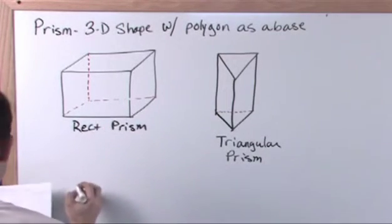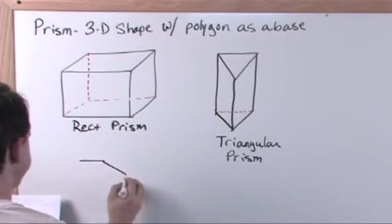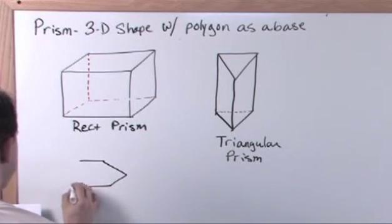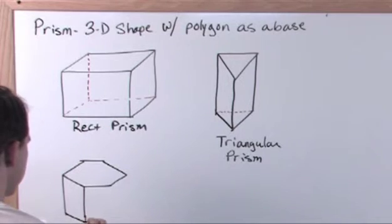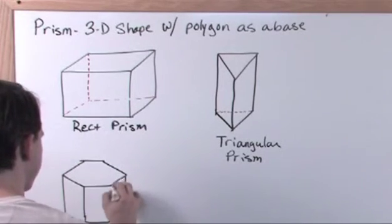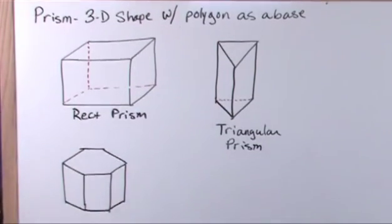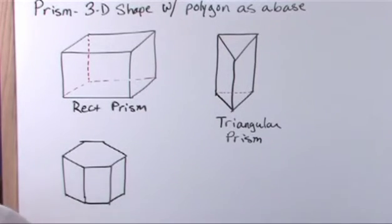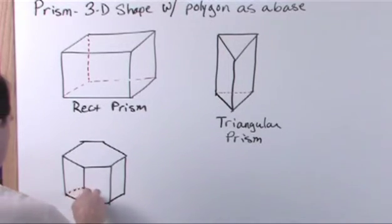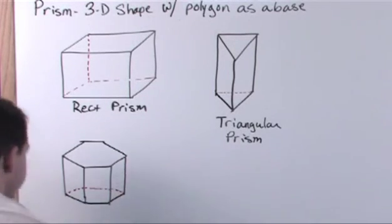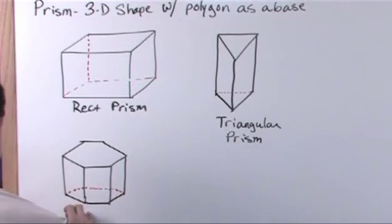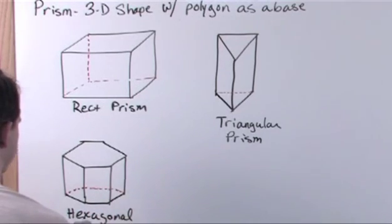Now if you had something that had like a hexagon, six sided figure remember is a hexagon. Right, and you can draw it like this. Right. And you can also draw your hidden lines to make it clear like this. Okay. This is called a hexagonal prism. Okay. It's a prism because it's three dimensional.